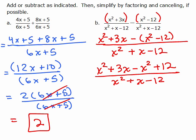So I have x squared plus 3x minus x squared plus 12 because you have to distribute that minus sign. Well now in the numerator, the x squared minus x squared, that's gone. So I have 3x plus 12 over x squared plus x minus 12. Now we need to factor.